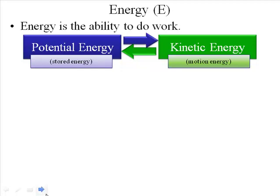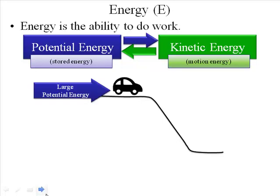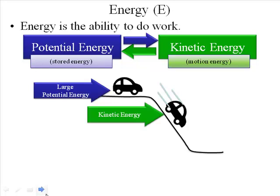One simple way to remember the difference between potential and kinetic energy is just to picture a car sitting on top of a hill. If that car is perched very close to the edge of the hill but it's not moving, we would say it has a large potential energy. The reason is the potential for the car to roll down the hill is very, very high. Once the car did start to roll down the hill, it would be in motion, so that large potential energy would at least partially transfer into kinetic energy.